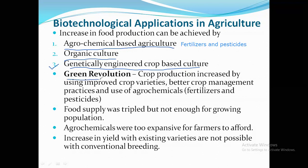The green revolution is basically agrochemical-based agriculture. It started around 1950-1960 in India, and crop production increased because of use of chemical fertilizers and pesticides. Food supply was tripled, but still not enough for the growing population. India has a population of more than 130 crores, and it is very difficult to maintain a population of this size with just agrochemical-based agriculture. Besides, it is also too expensive, and farmers in India are very poor, so they don't afford chemicals and take loans to buy fertilizers.